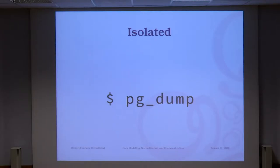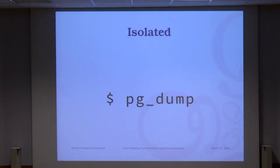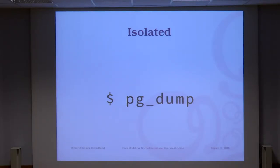It's easy to mix atomicity and isolation — it's the other side of the same thing. Atomic means nobody sees what you're doing until you commit. Isolated means you have a choice of whether you want to see what the other transaction did during your own transaction. pg_dump, for example — a logical backup of your database — needs to not see whatever happens. It does a BEGIN and then SELECT from tables, wanting to see the same snapshot of the database during all its processing.